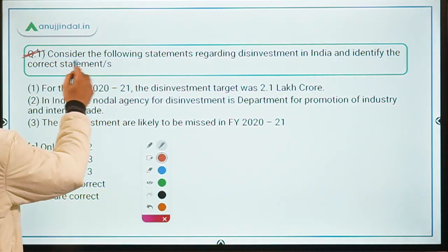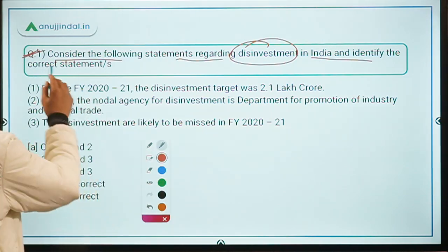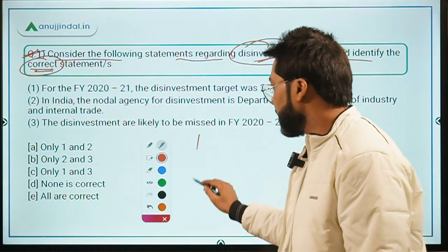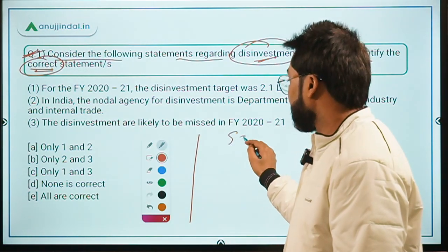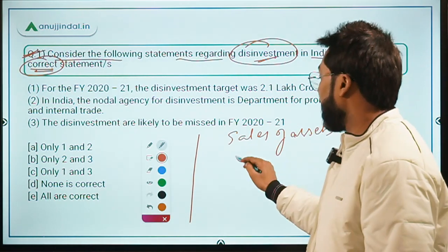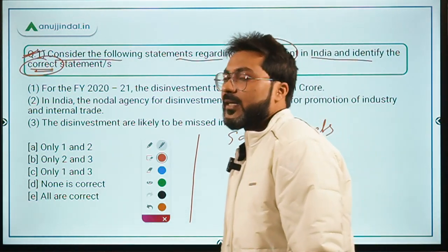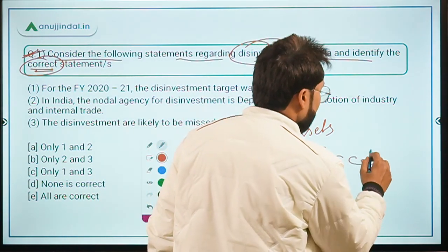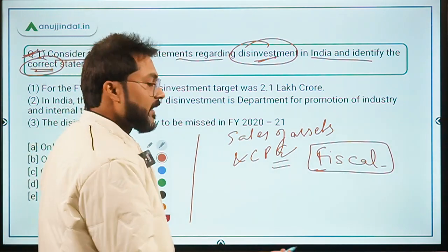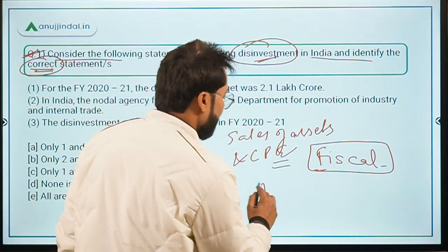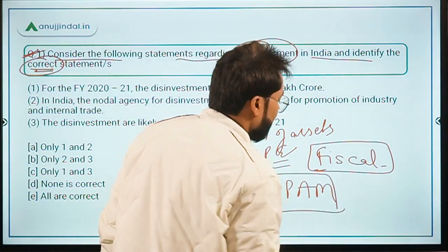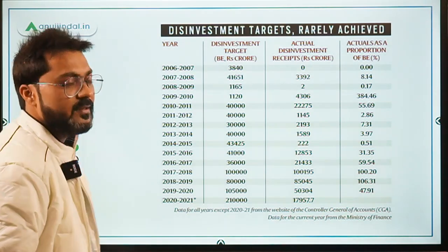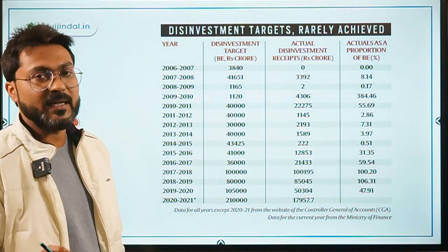Let's begin with the first question. Consider the following statements regarding disinvestment in India and identify the correct statement. Disinvestment means sale of assets of central and public enterprises by the government, done to reduce the burden of fiscal deficit on the exchequer. The nodal agency for disinvestment in India is the Department of Investment and Public Asset Management (DIPAM). Recently, the Ministry of Finance released data regarding the disinvestment target for this financial year.